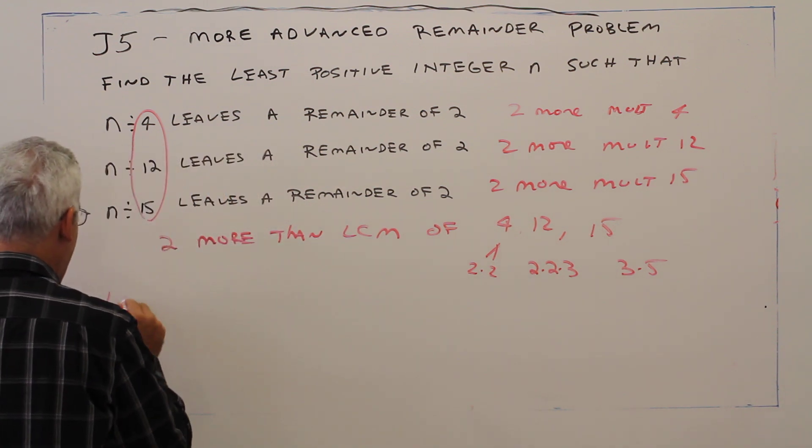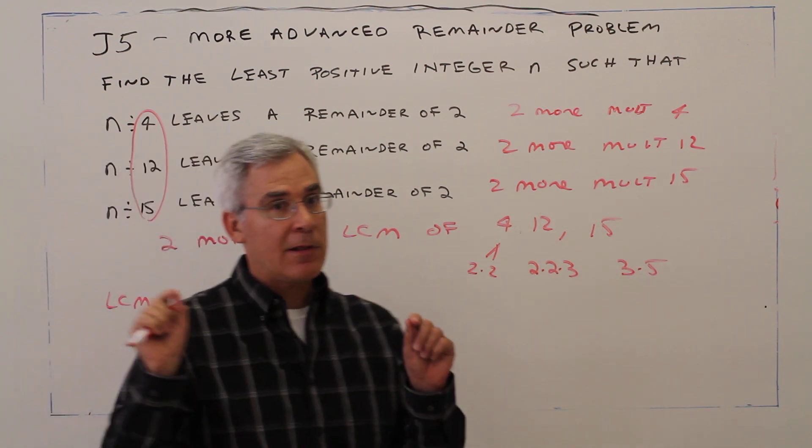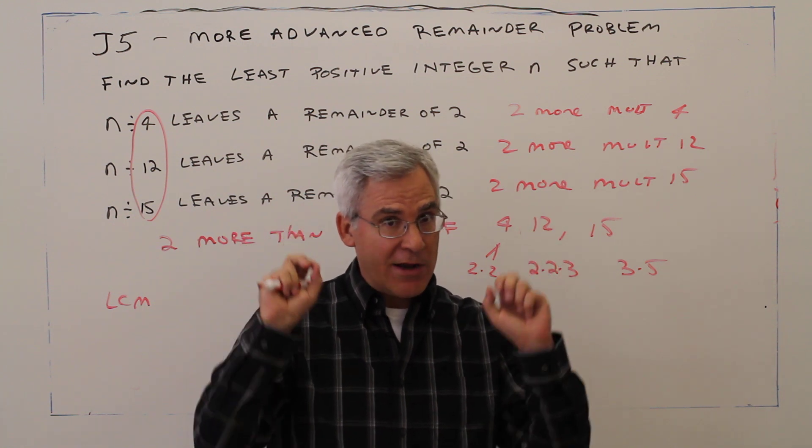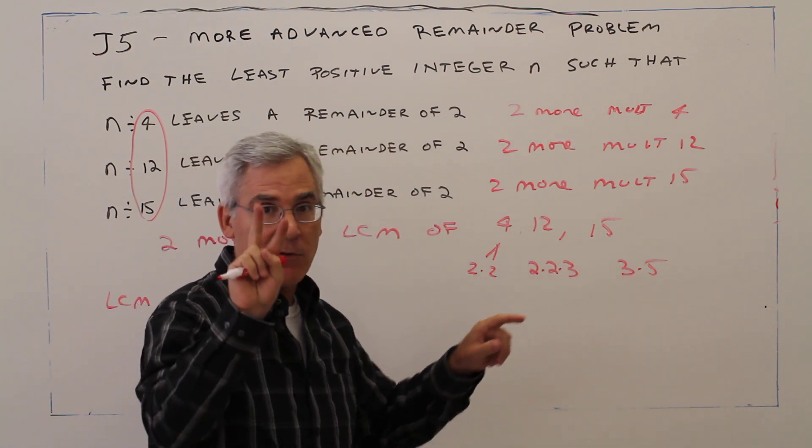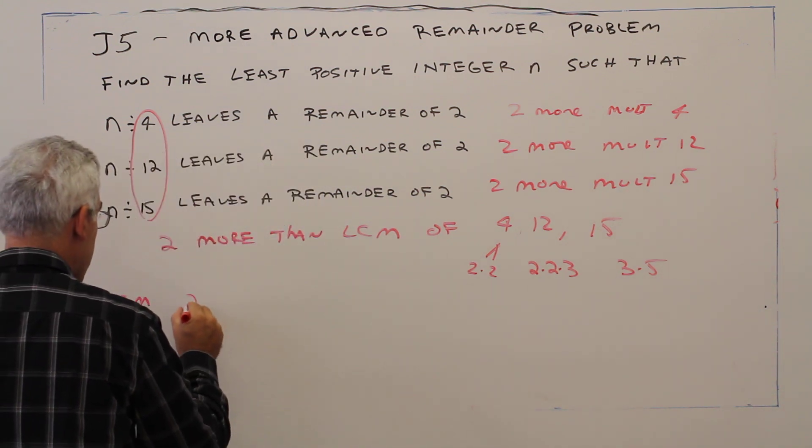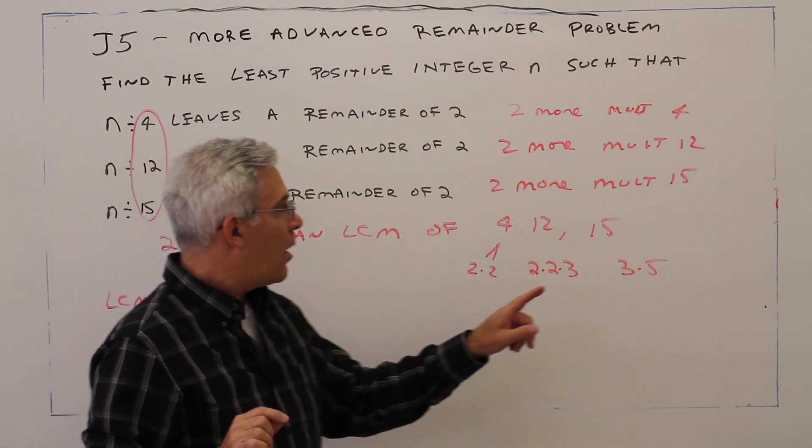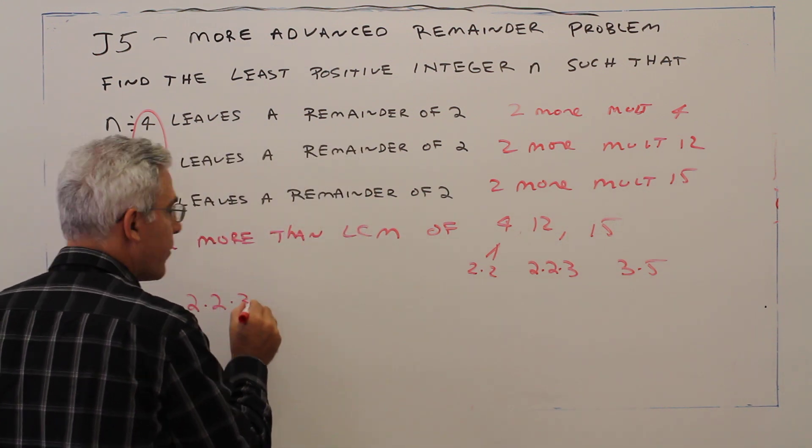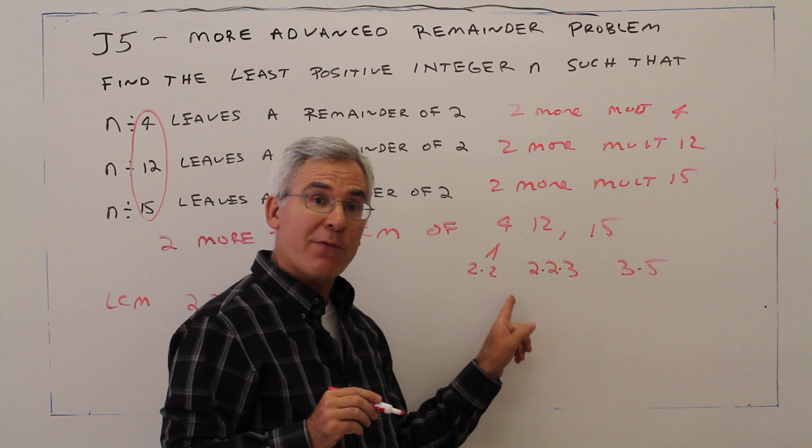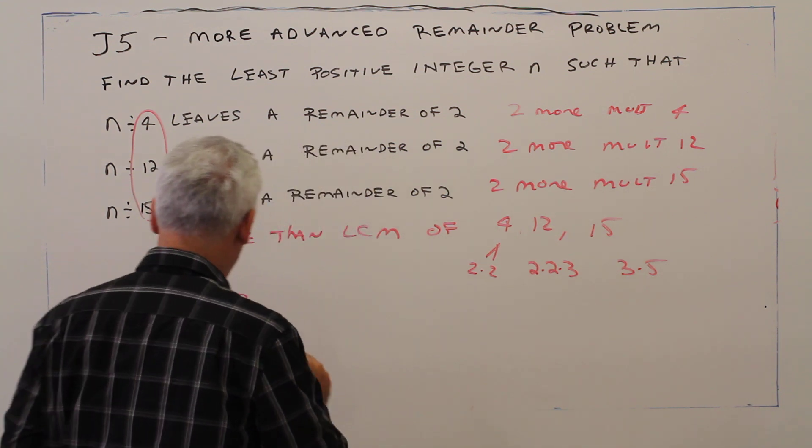So for the LCM, remember least means greatest. I see two factors of 2, two factors, no factors, report two factors of 2. One 3, one 3, no 3s, report one 3. One 5, no 5s, no 5s, report one factor of 5.